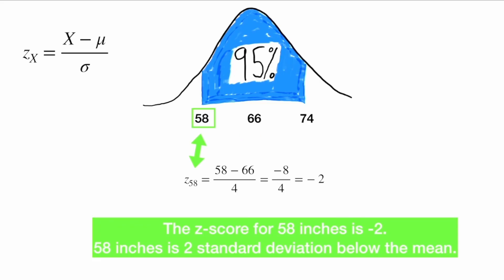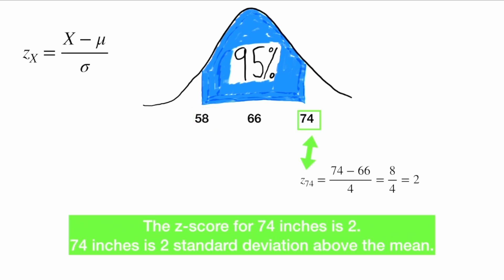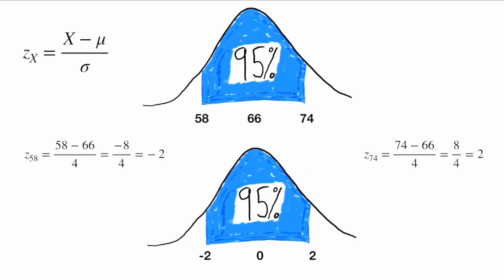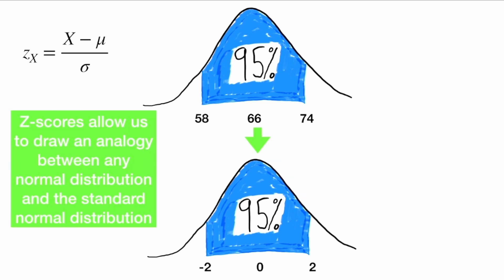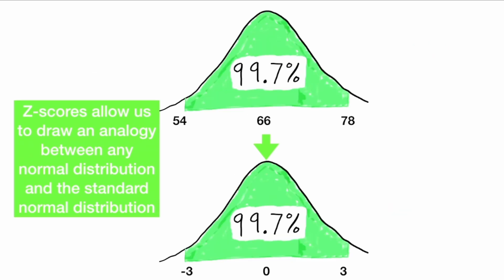Similarly, the z-score for 58 inches is negative two — 58 inches is two standard deviations below the mean. The z-score for 74 inches is positive two — 74 inches is two standard deviations above the mean. So again, we draw an analogy to a z-distribution, and we can use this to say that 95% of observations are within two standard deviations of the mean. Z-scores allow us to draw an analogy between any normal distribution, like the distribution of height, and the distribution of z-scores. We can see this again with 99.7%: the z-scores for 54 and 78 are negative three and positive three, and we can use the empirical rule to tell us what the probability of lying within that range is.